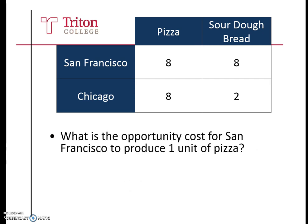How about San Francisco? What is the opportunity cost for San Francisco to produce one unit of pizza? San Francisco can produce eight units of pizza in one day or can produce eight units of sourdough bread — an eight to eight ratio. So San Francisco's opportunity cost is one unit of bread.